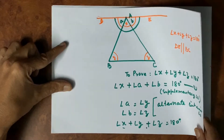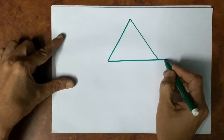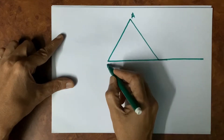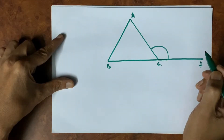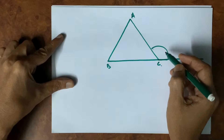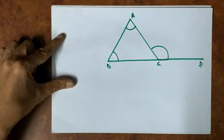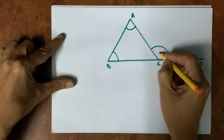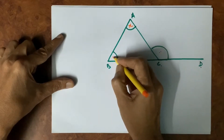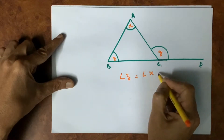Now we prove another important theorem: if we have a triangle ABC and D is a point beyond C, then angle ACD is an external angle of the triangle. This external angle is equal to the sum of the two opposite interior angles. Let us name the angles: angle X, angle Y, and angle Z — the exterior angle. So we have to prove that angle Z is equal to angle X plus angle Y.